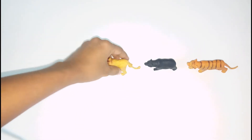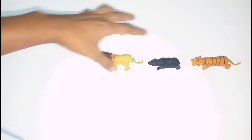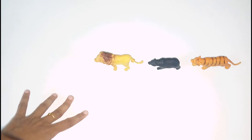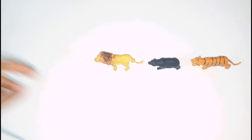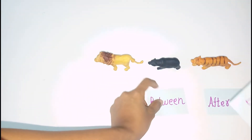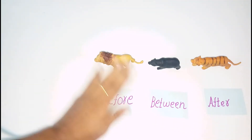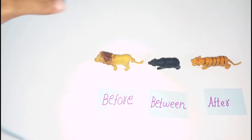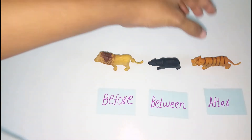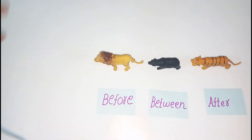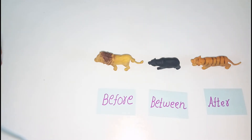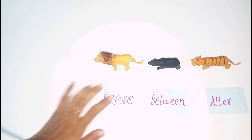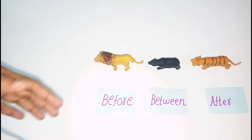There are three toys — I have three animals. I am going to line up the three animals and label them: one is 'after,' one is 'between,' and one is 'before.' We have the left-hand side as 'before' and the right-hand side as 'after.' We have a story, so we have to collect the animals and create that story.